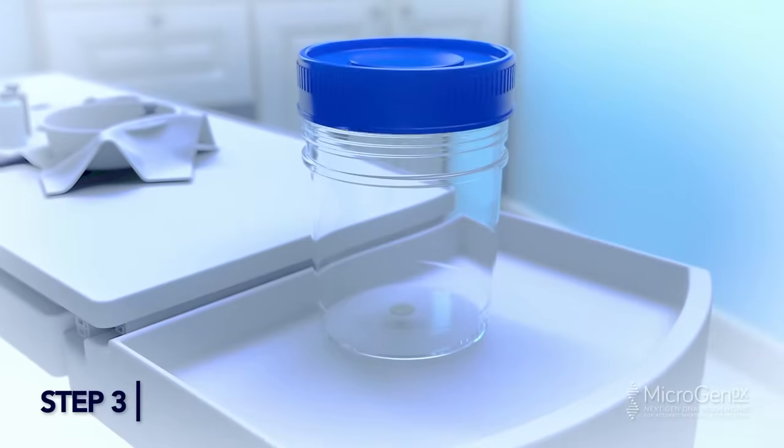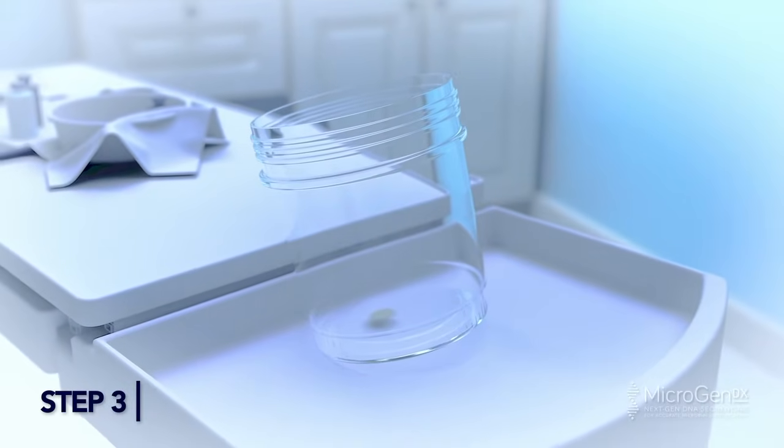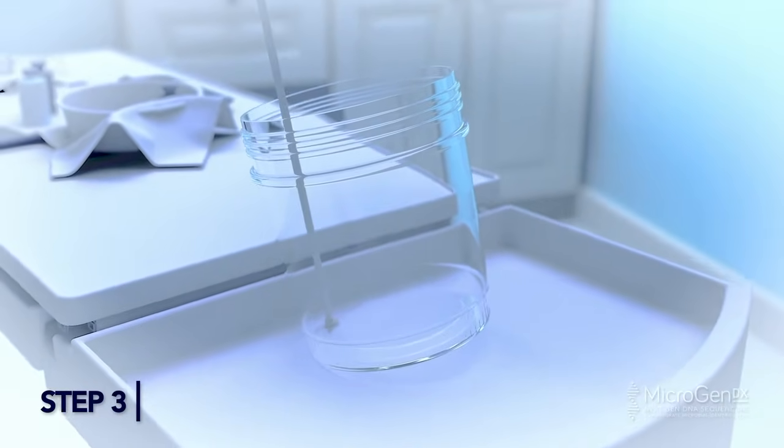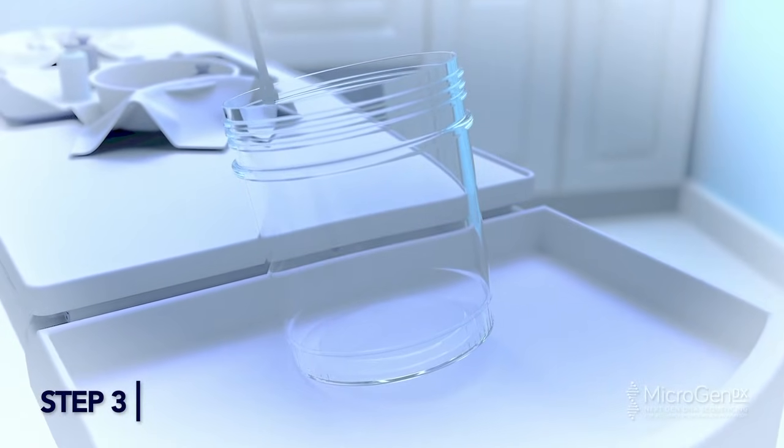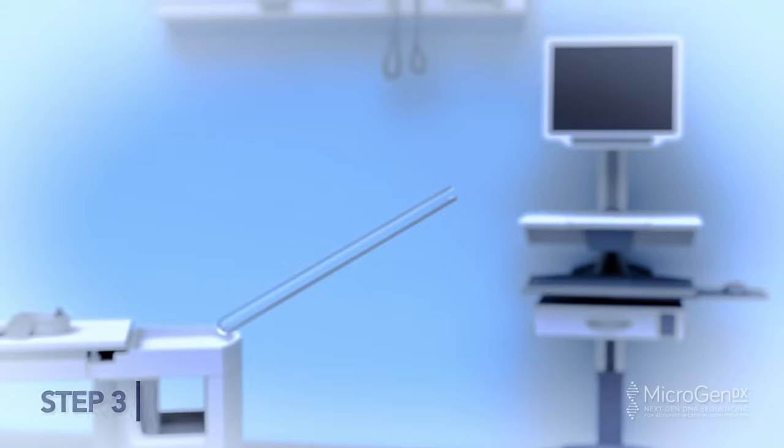Step 3: If only a minimal amount of semen excretion is collected, use the swab to collect the fluid by rolling swab through the fluid in the collection cup, collecting as much fluid as possible on the swab tip.